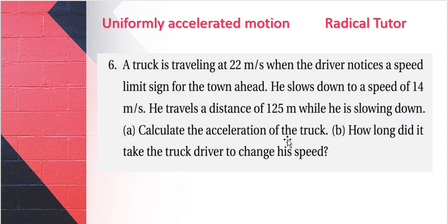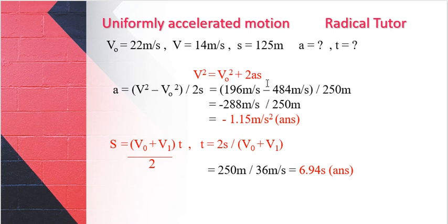Part a: Calculate the acceleration of the truck. We use the formula: final velocity squared equals initial velocity squared plus 2 times acceleration times distance. So acceleration equals v-final squared minus v-initial squared divided by 2s. That's 14 squared minus 22 squared divided by 2 times 125 meters, which equals 196 minus 484 divided by 250, equals negative 288 divided by 250, equals negative 1.15 meters per second squared. This is deceleration.